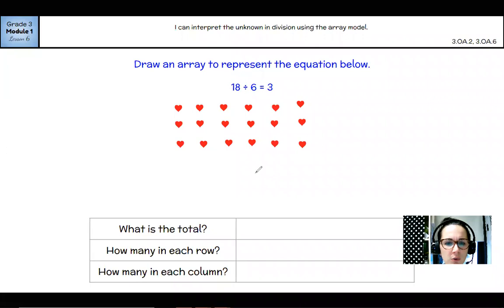So what is the total? I know I made 18 hearts. How many are in each row? Rows go side to side. There are 6 in each row. And how many are in each column? Columns go up and down. There are 3 in each column. So 18 divided by 6 equals 3.